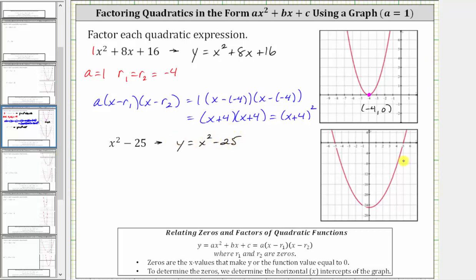Notice how we have two horizontal intercepts, one here on the left at x equals negative five, and one on the right at x equals five. The ordered pairs for these points are negative five comma zero, and five comma zero.